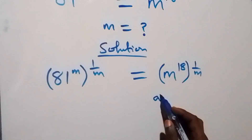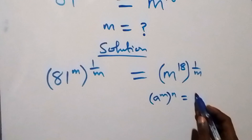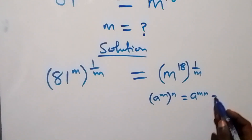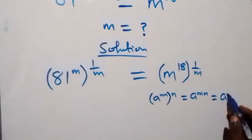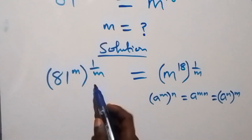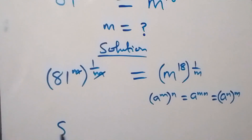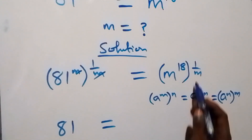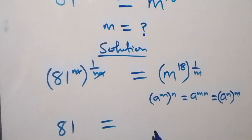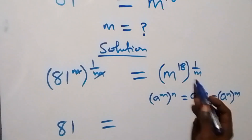From the law of indices, where we have a raised to power m, then raised to power n, this equals a raised to power mn — which we can also write as a raised to power n, then raised to power m. Applying this, the powers of m cancel each other, and we are left with 81 equals m raised to power 18 over m.